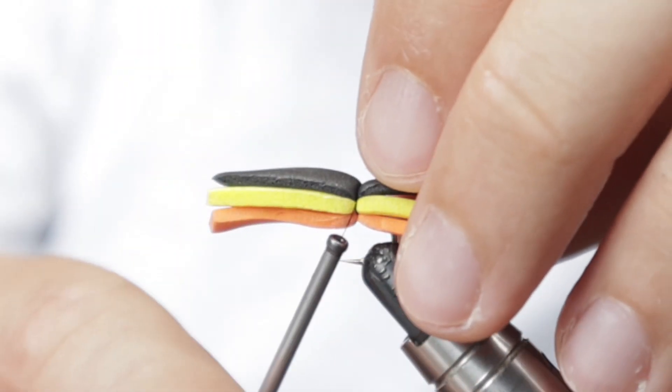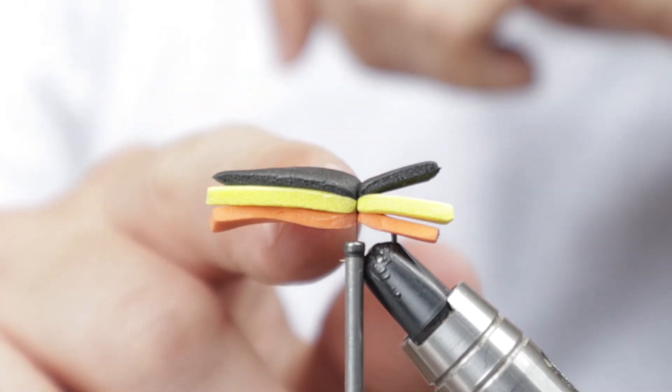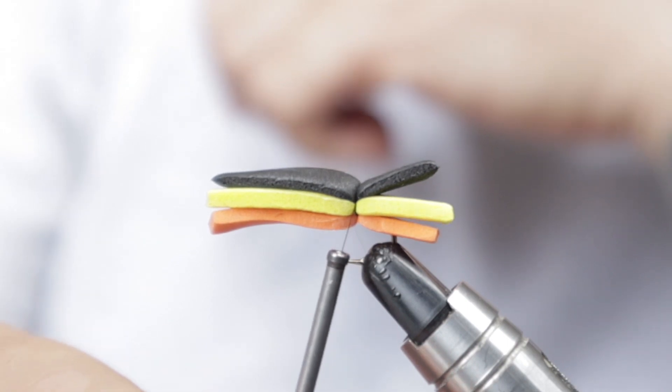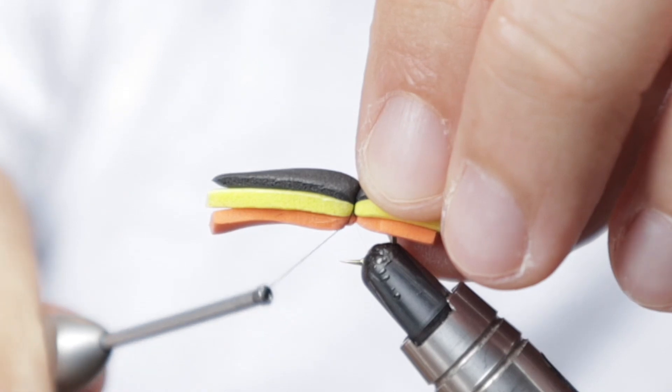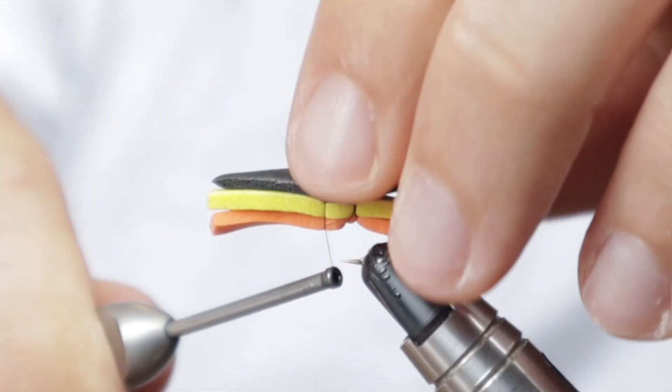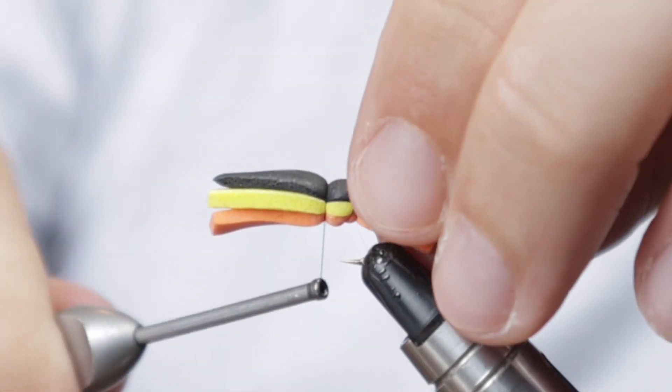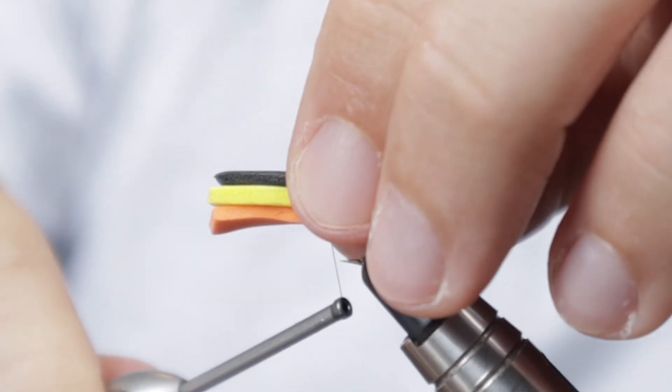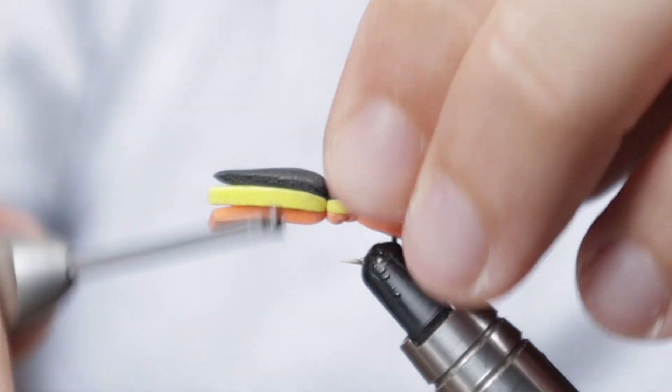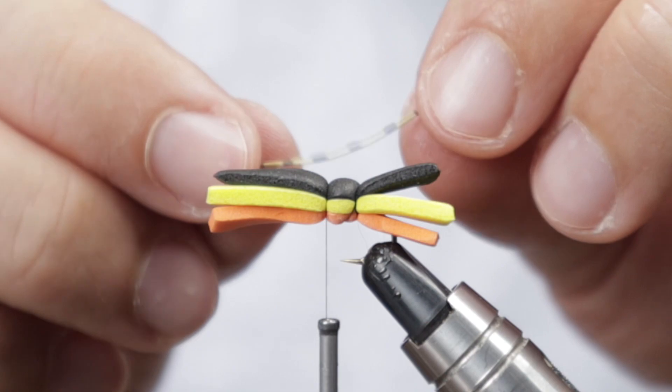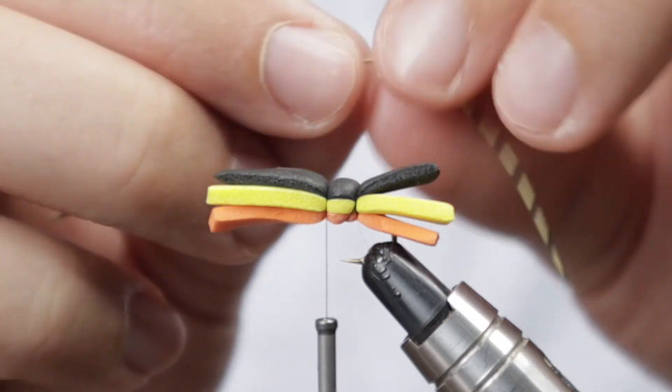Now at this stage, you're going to come up the body, pick the distance you want to have your sections at to create that rib effect or that section effect to the body. A couple of turns at each point and at this first second section.